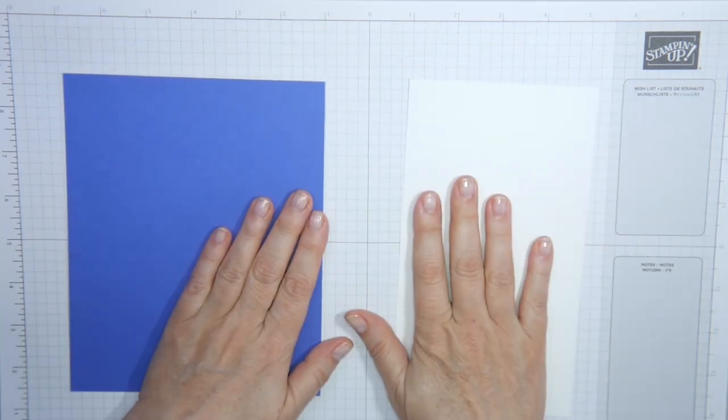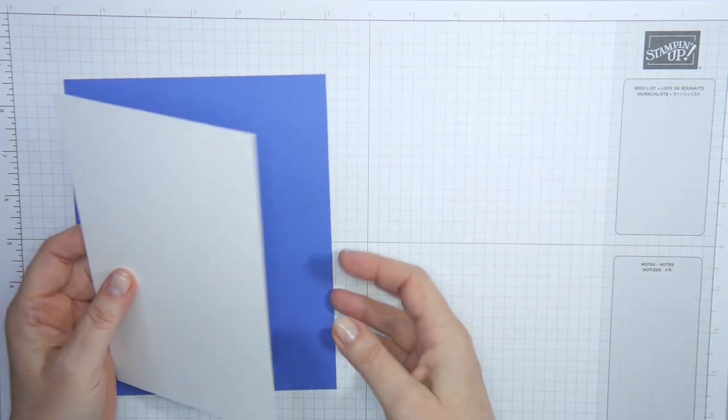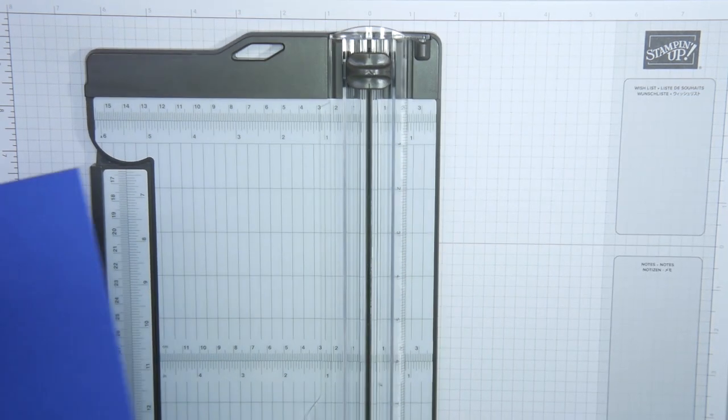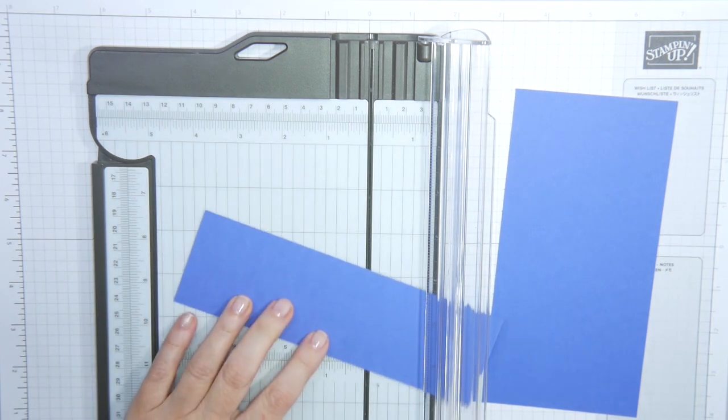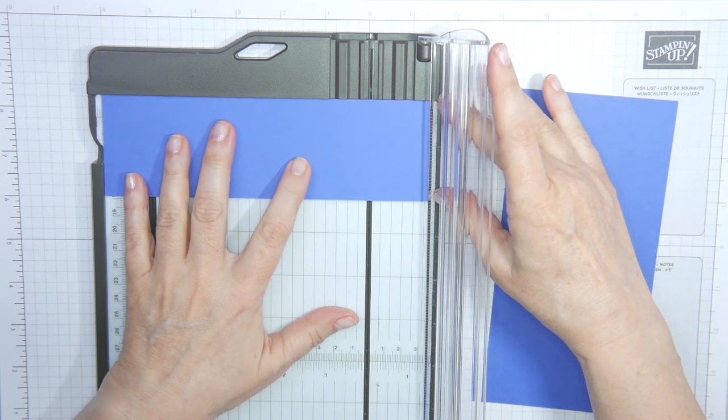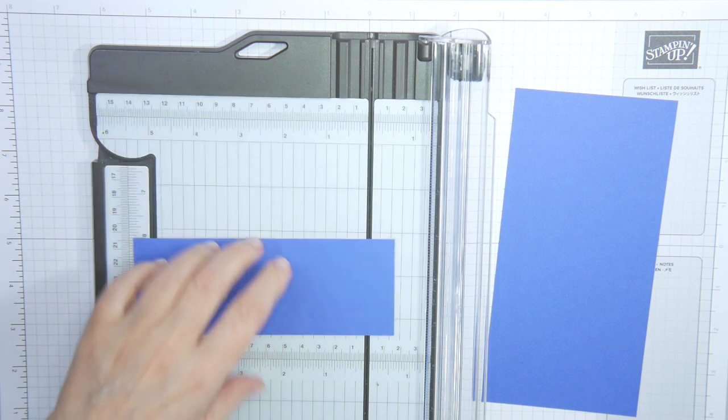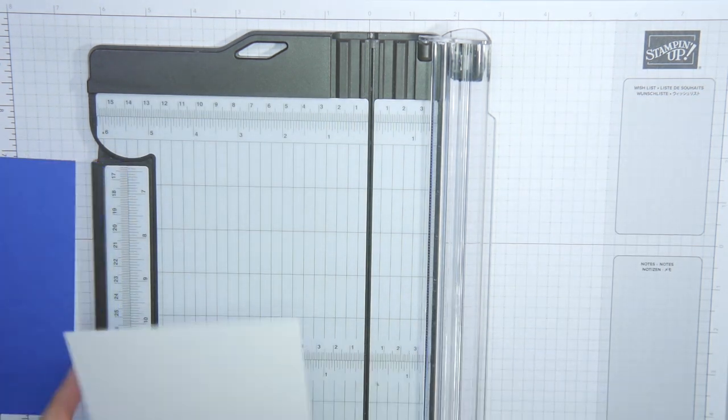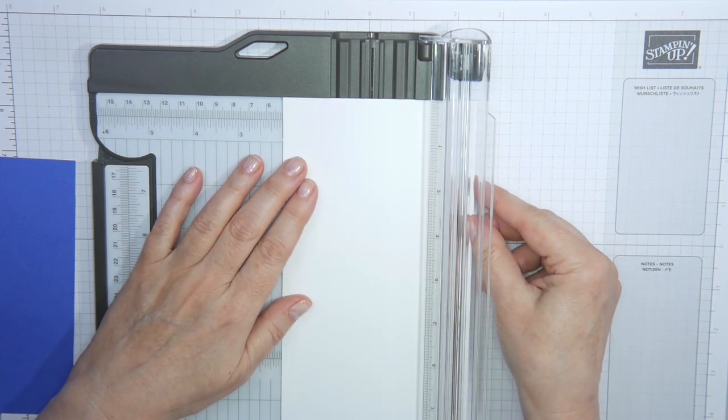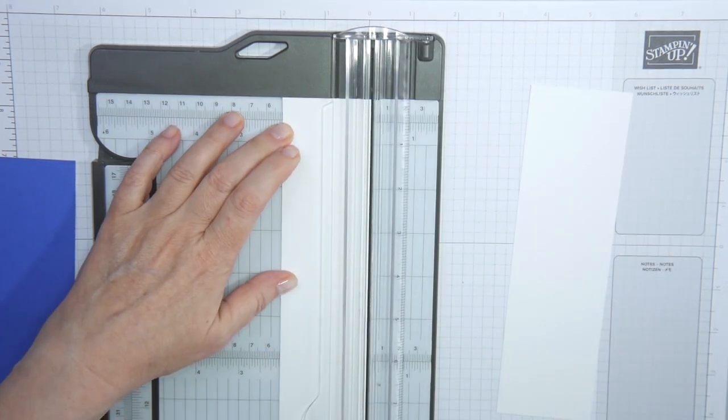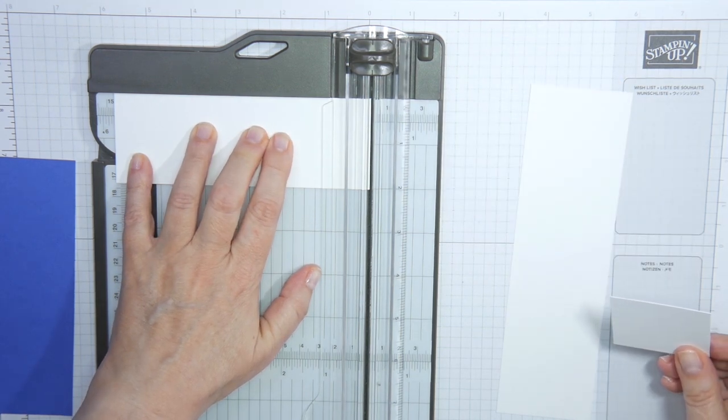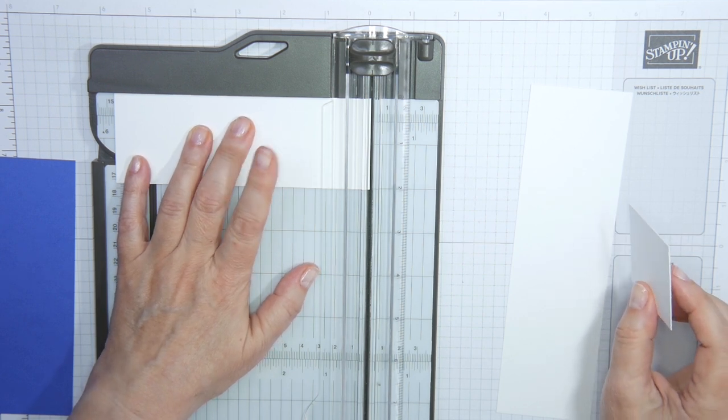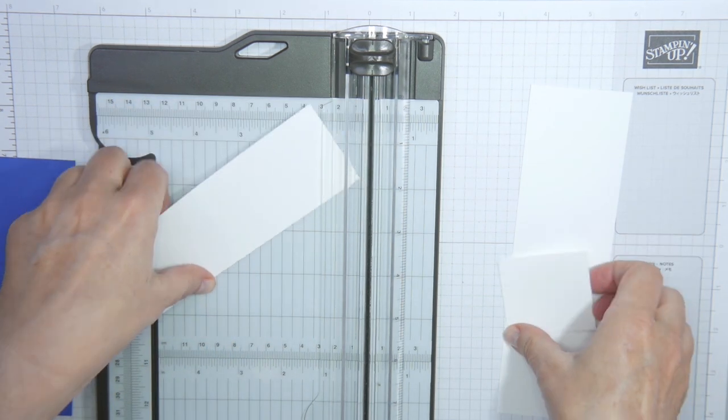The bookmark. First of all, you need some colored cardstock and some basic white. And the colored cardstock piece is two and a quarter inches. I'm going to cut that first. Two and a quarter, which is 5.7 millimeters, and then six inches. So 15.2. And then you want a piece of basic white, which is just a quarter inch smaller on all sides. So it was two and a quarter. Then you go to two inches in centimeters. That would be 5.1. And then five and three quarters.